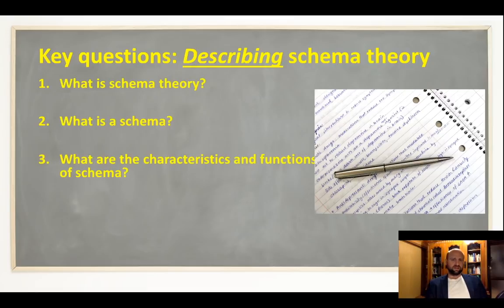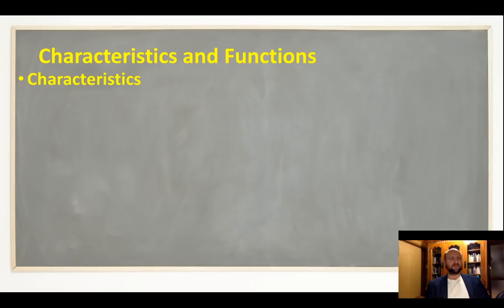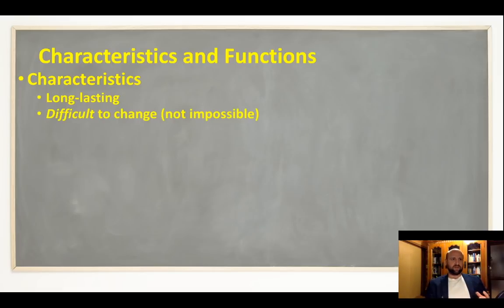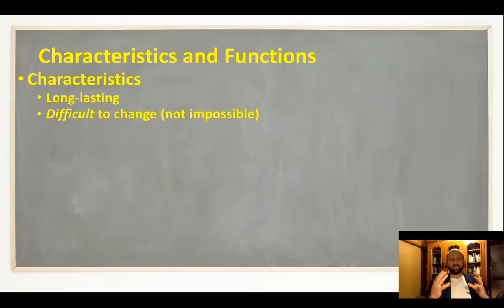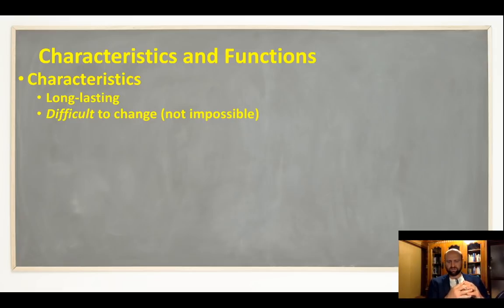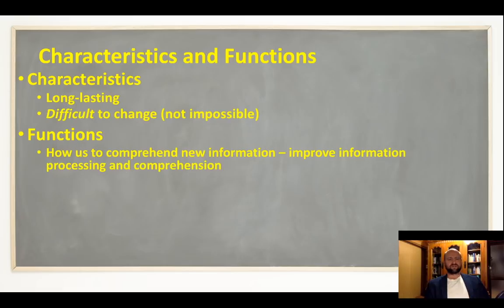Carrying on with our summary of schema theory, we need to look at characteristics and functions. One characteristic is that schemas are long-lasting — they are collections of our experiences, knowledge, and memories that build up over time. Because they are collections of a lot of information, they're pretty difficult to change. For example, once we develop a stereotype — which is a type of schema — that generalization is based on a lot of experience, including media, things we've read, and what we've been told by others.